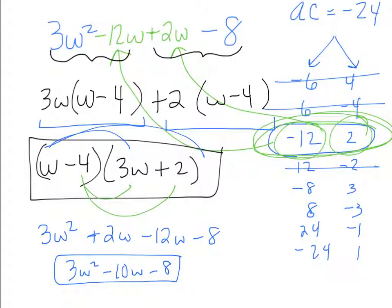What happens if you get to this grouping line and you have W minus 4 here but the second group came out to like W minus 3? That might mean the first one is wrong. Or maybe it's not factorable. If you don't get the same thing in those parentheses, check that you did it right first. If you check and get the same answer again, that means it's not factorable.